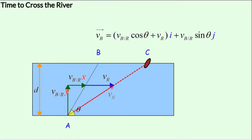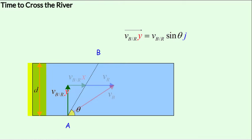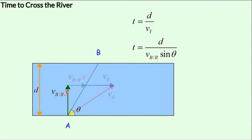The y-component of the velocity of the boat with respect to the ground also happens to be the y-component of the velocity of the boat with respect to the river in this case. The y-component of the boat's velocity is vb_r·sinθ, and the distance to cross along the y-axis is d. Since there is no acceleration along the y-axis, we use the second equation of motion, which reduces to a simple distance over velocity.